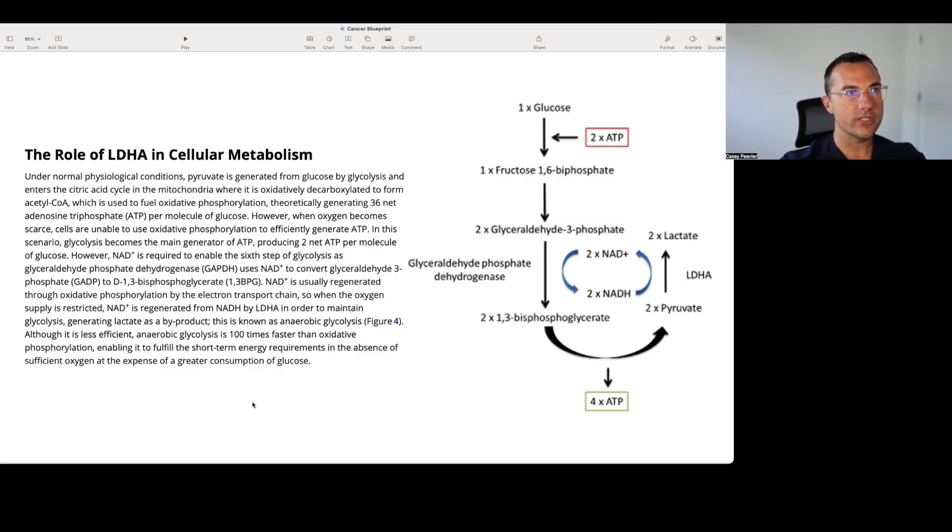Theoretically generating 36 net ATP or adenosine triphosphate per molecule of glucose. However, when oxygen becomes scarce or in hypoxic conditions, cells are unable to use oxphos or oxidative phosphorylation to efficiently generate ATP. In this scenario, glycolysis becomes the main generator of ATP, producing two net ATP per molecule of glucose. However, NAD is required to establish the sixth step of glycolysis as glyceraldehyde phosphate dehydrogenase, GAPDH, uses NAD to convert glyceraldehyde 3-phosphate, GADP, to D1,6-bisphosphoglycerate, 1,3-BPG.